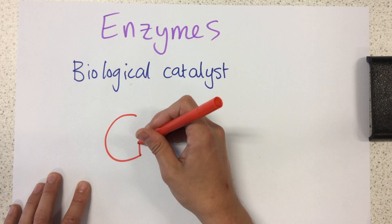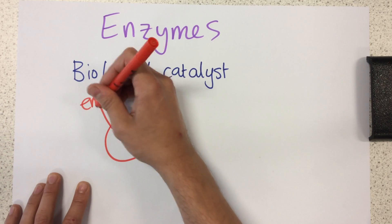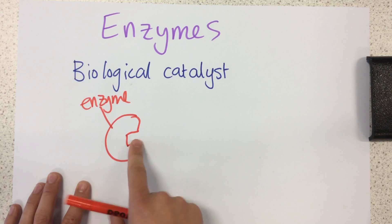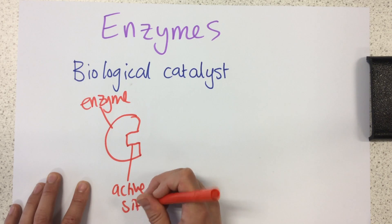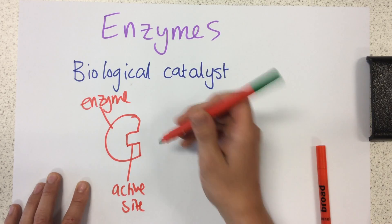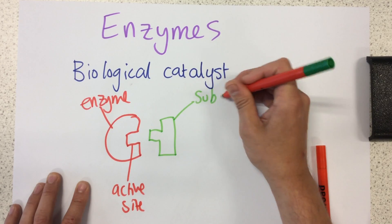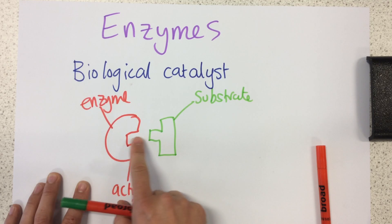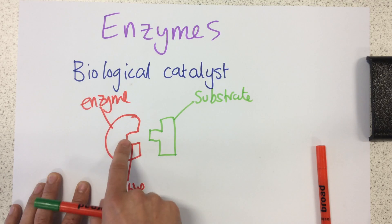I'm going to draw a simplistic example of an enzyme here. An enzyme has a structure that we need to know a little bit about. There's a particular place on the enzyme called the active site. This is where the substrate molecule attaches — the substrate fits into this active site on the enzyme.